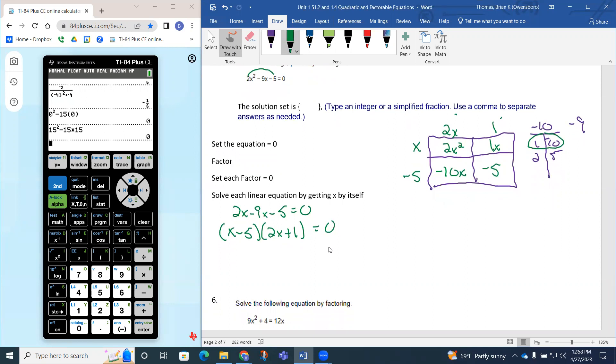Since we've got it factored, we want to set each factor equal to 0 to finish solving this equation. So x minus 5 is going to equal 0, and 2x plus 1 is going to equal 0.